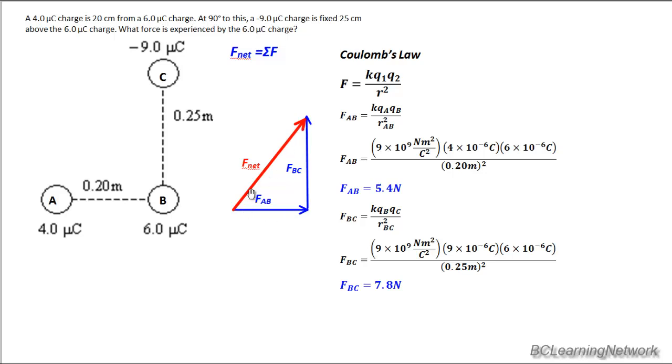The only thing that's left to determine Fnet is the Pythagorean theorem since this is already at 90 degrees. FAB is 90 degrees to FBC. So our last step is Pythagoras, and we can even get the direction using tan theta. So let's finish it up now and see what we get.